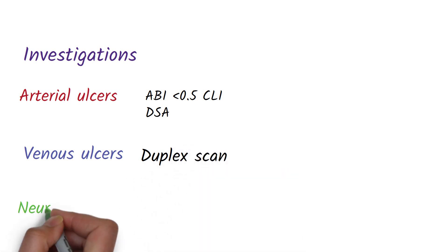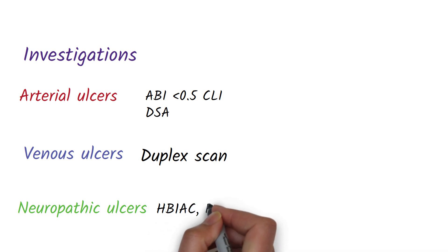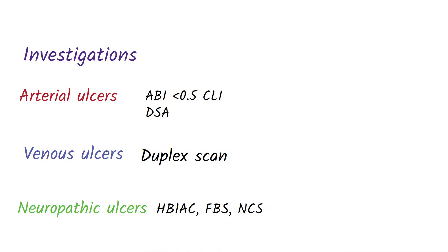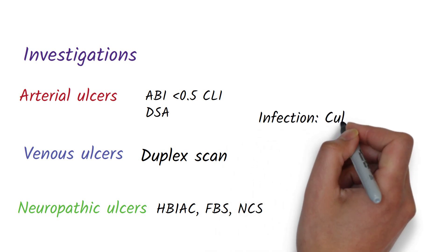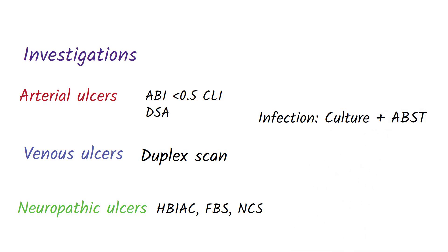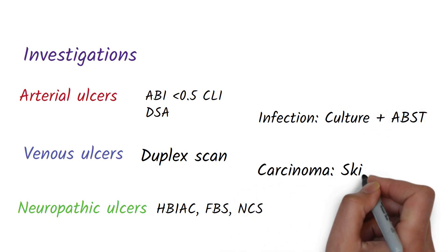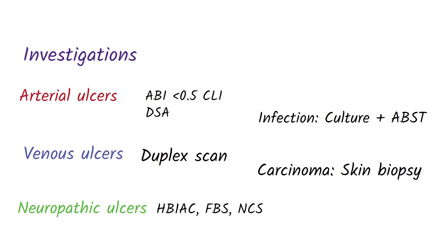HbA1c levels and fasting blood sugar can be done to check blood glucose levels. Nerve conduction studies may be needed in neuropathic ulcers. If the ulcer is infected, culture and sensitivity is done. A skin biopsy may be required in patients suspected with squamous cell carcinoma.